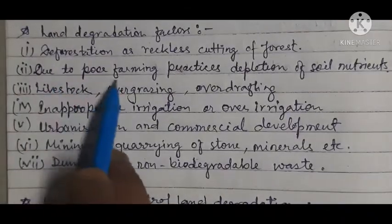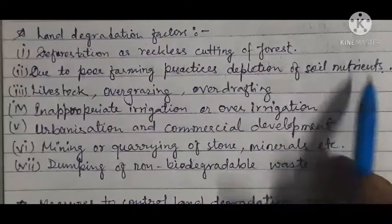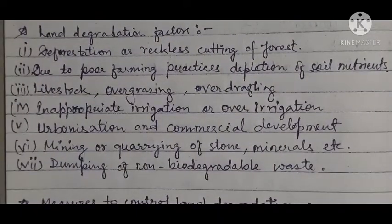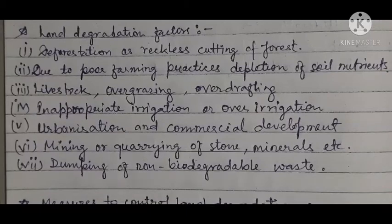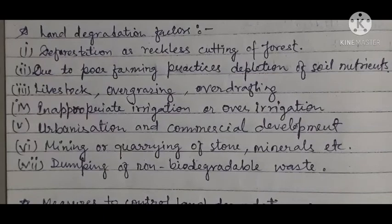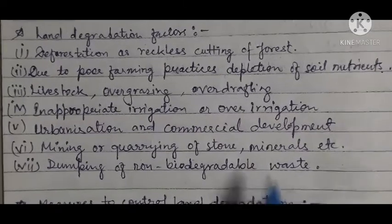Number two — due to poor farming practices, depletion of soil nutrients. This also causes land degradation. If soil nutrients are degrading, then land will also degrade. The reason given is due to poor farming practices — meaning if we use too many high-yielding variety seeds, or fertilizers, insecticides — using all of these causes land to degrade.